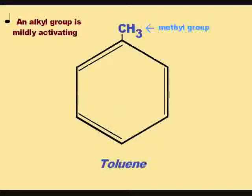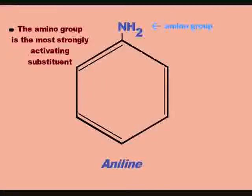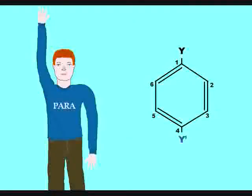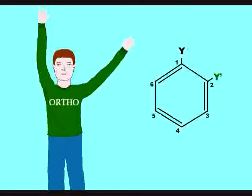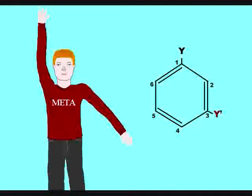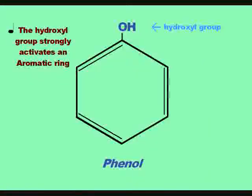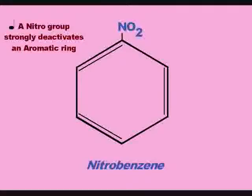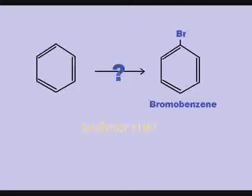It's fun to sing about my benzene ring, fun to sing about my benzene ring! Substitute methylene and you have toluene, NH2 for aniline. It's fun to sing about my benzene ring, fun to sing about my benzene ring! Add O-H for phenol. Phenyl's missing an H. HNO2 makes nitrobenzene.